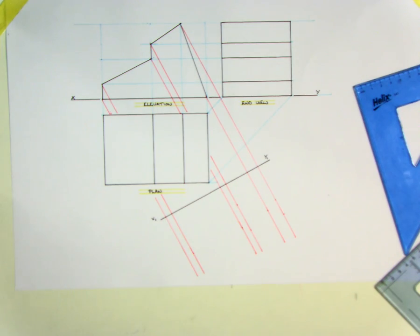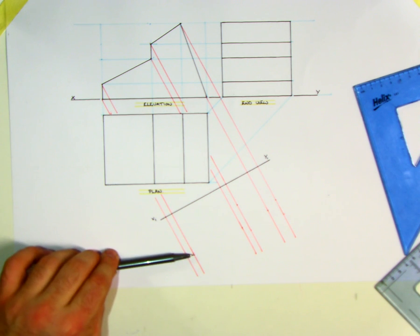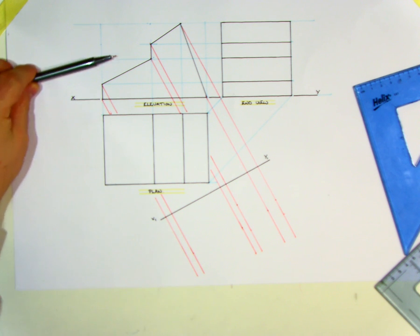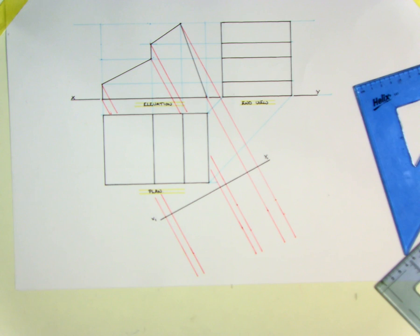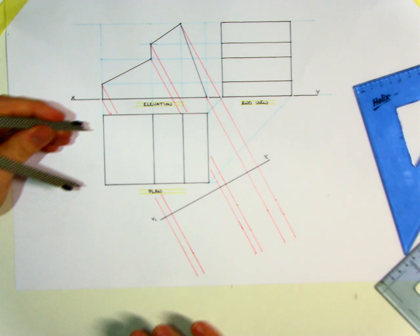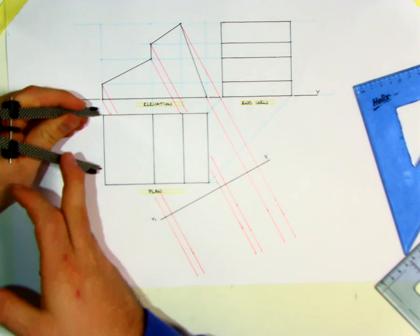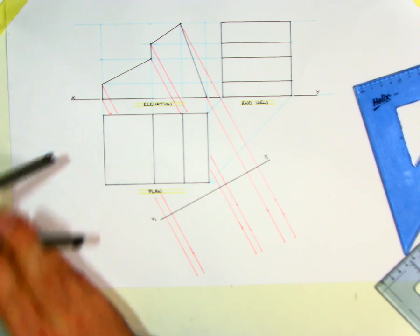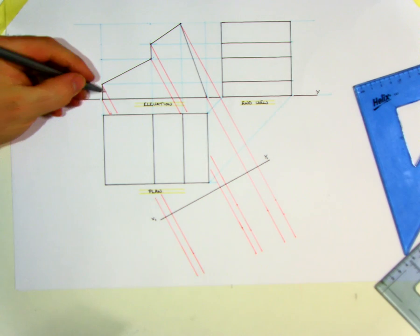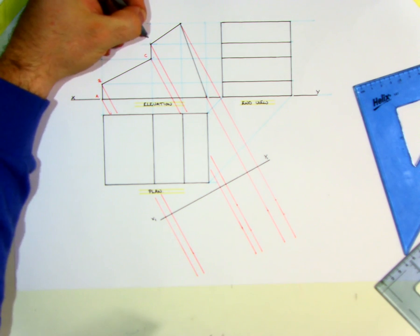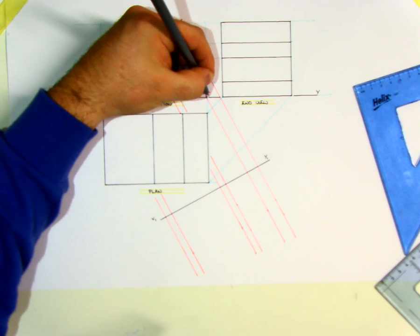Now, a rule of thumb. When we're dealing with auxiliary views, if I project from my elevation, I'll get my widths from the plan. If I project from plan, I'll get my heights from elevation. Okay? So, that's my rule of thumb. Okay? So, I'm going to work here and get my height for this point here. Okay? Now, there are two points. Okay? And I'm going to label this A, B, C, D, E, and F.